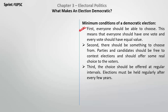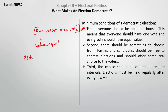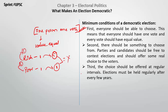The first condition is that everyone should be able to choose — one person, one vote — and the value of that vote should also be equal. For example, if you are rich and the person in front of you is poor, you each have one vote. But if your vote is counted as 5 in the final count and theirs as 1, there is no equality. This is called equality of vote — everyone should have one vote, one value.